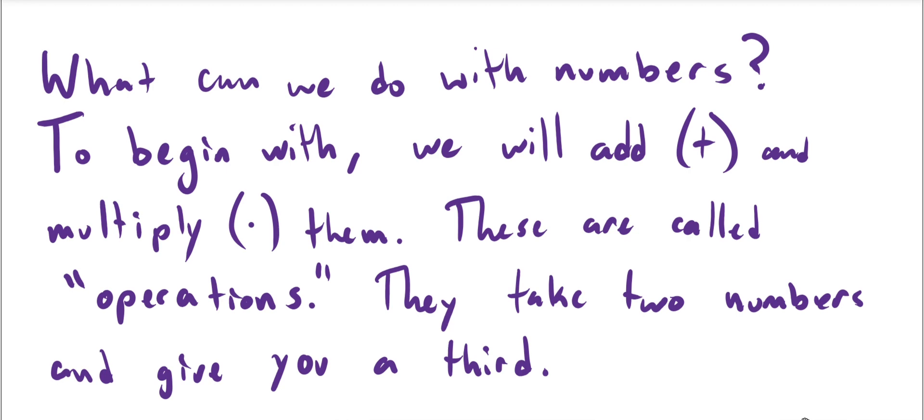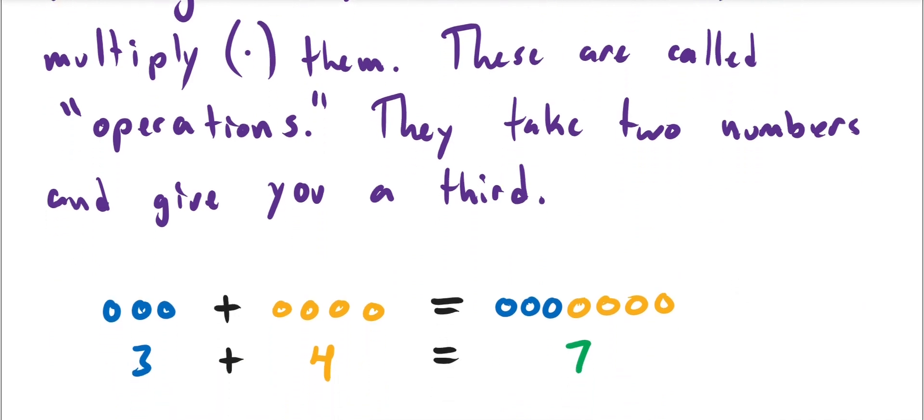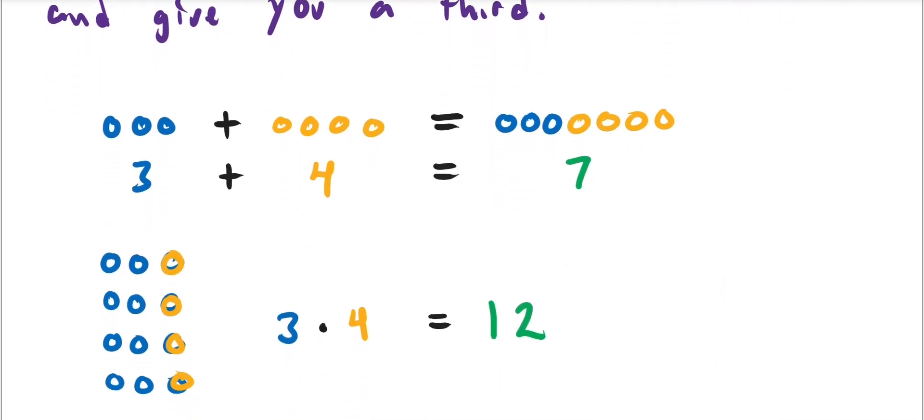So what are we going to do with numbers? To begin with, we will add and multiply them. These are called operations. They take in two numbers, and then they give you back some third number. Now, addition is basically the concatenation of two groups, combining them together to form one group, and asking about what is the quantity of that new group. Multiplication, on the other hand, is taking a number of groups, which is equal to the second quantity, and saying, well, now how many do I have? If I have four groups of three, then I have 12 in total.